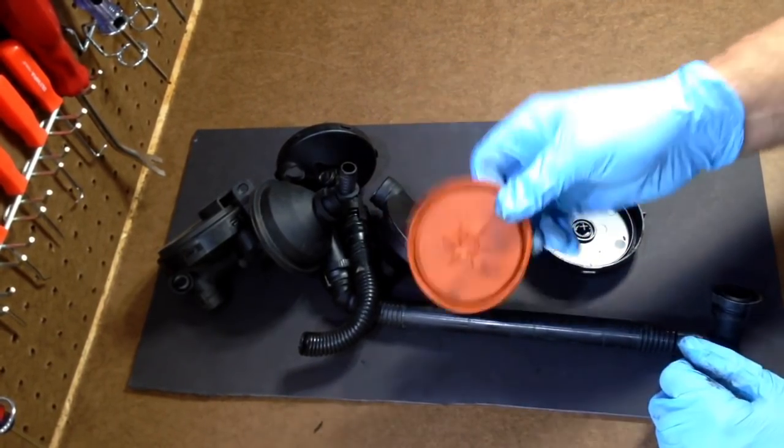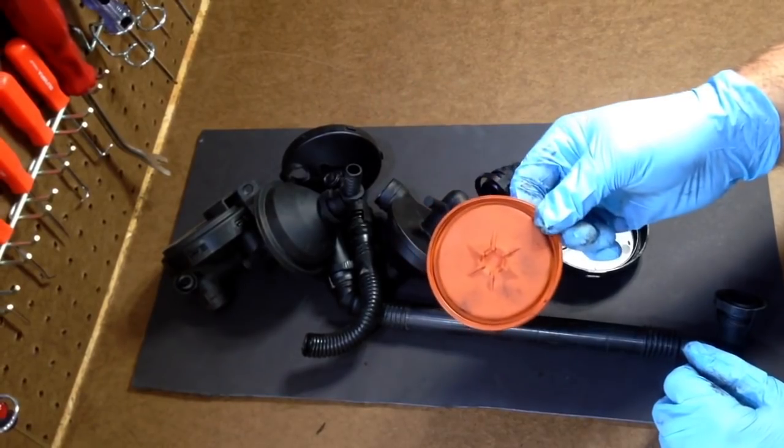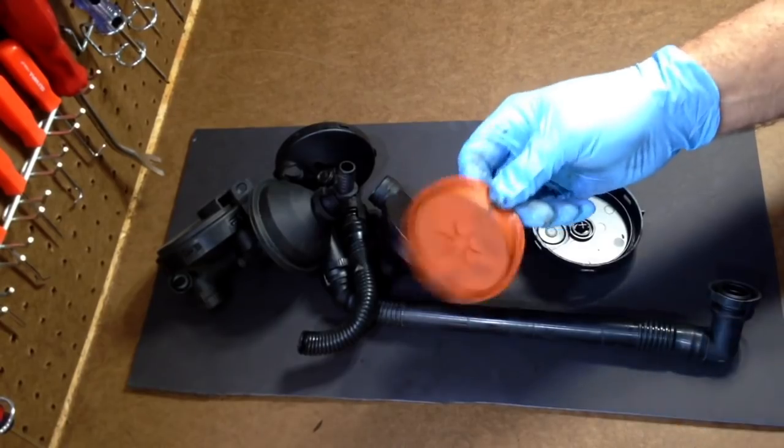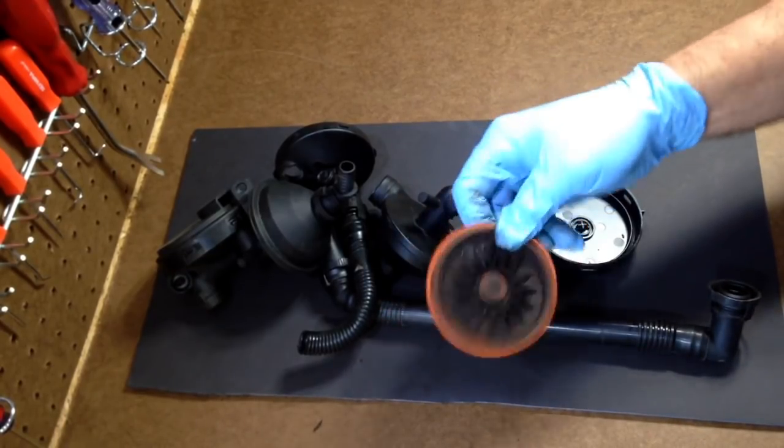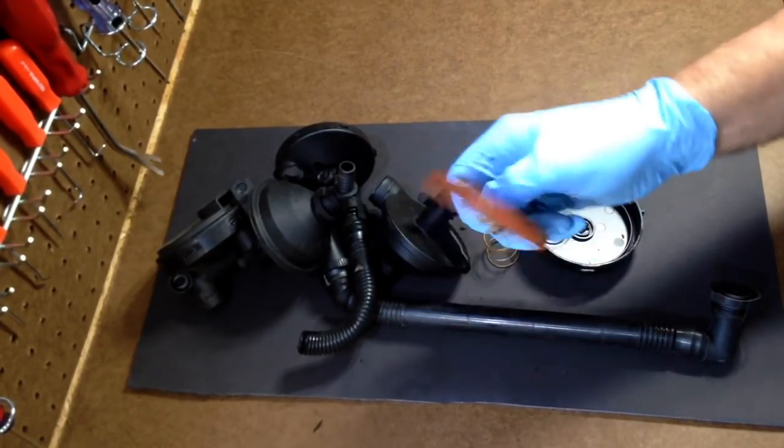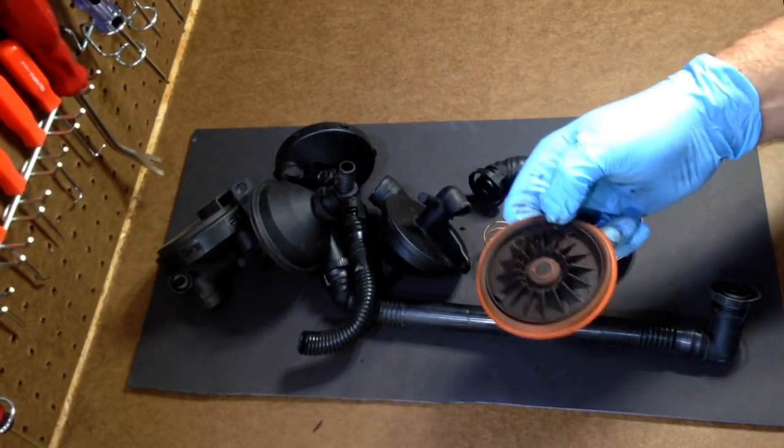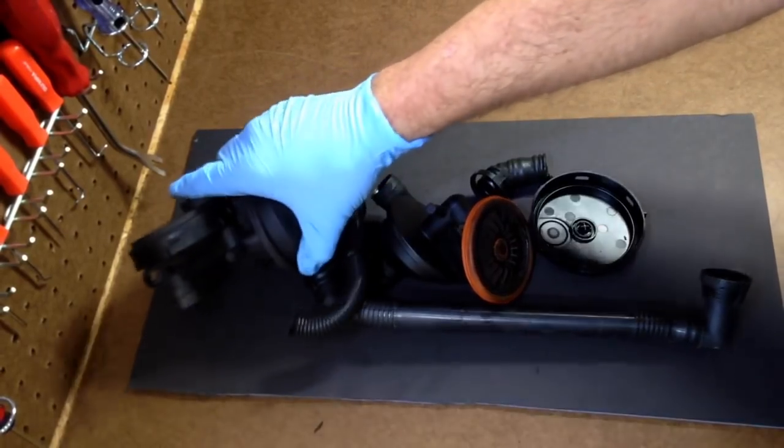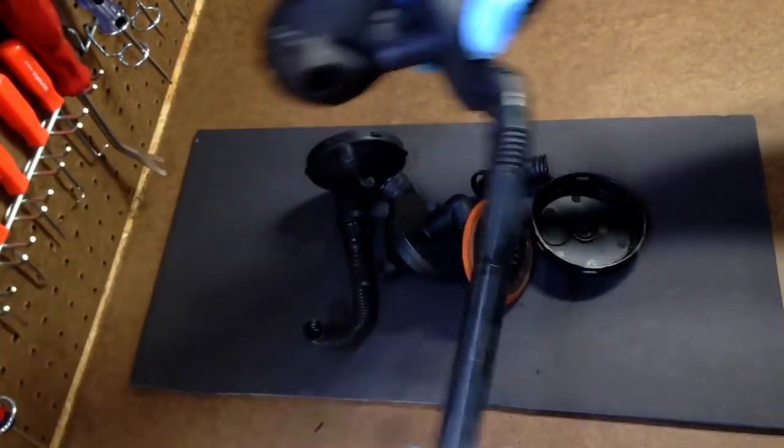Shops absolutely hate it when we take this off, throw it away, put the $15 catch can or you could put a hundred dollar catch can on whatever you want to do. This is a lot of BMW shops' bread and butter. This is how they make a lot of money. They're guaranteed to go out every 80, 90,000 miles. You can almost guarantee, get the customer for it.